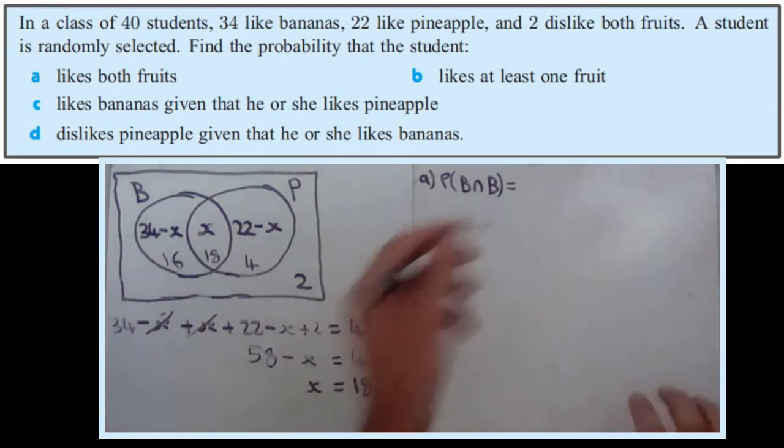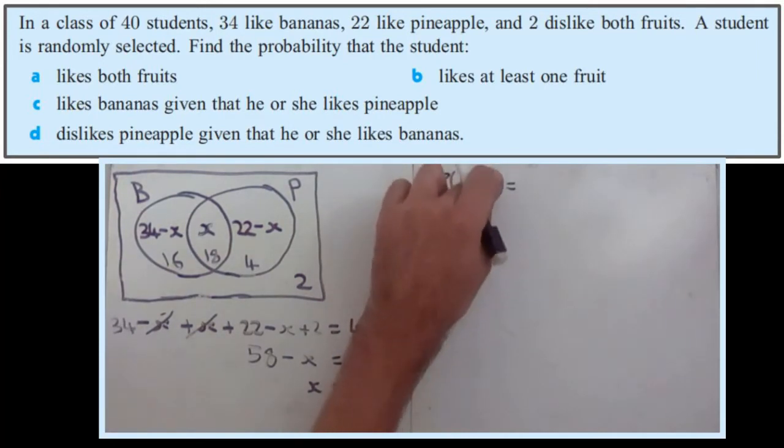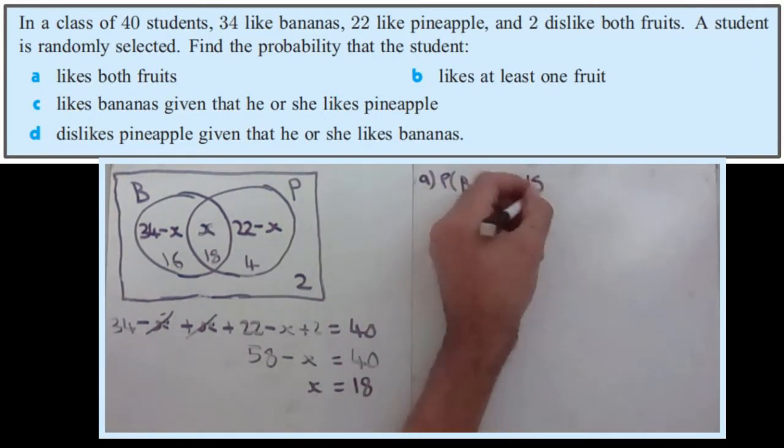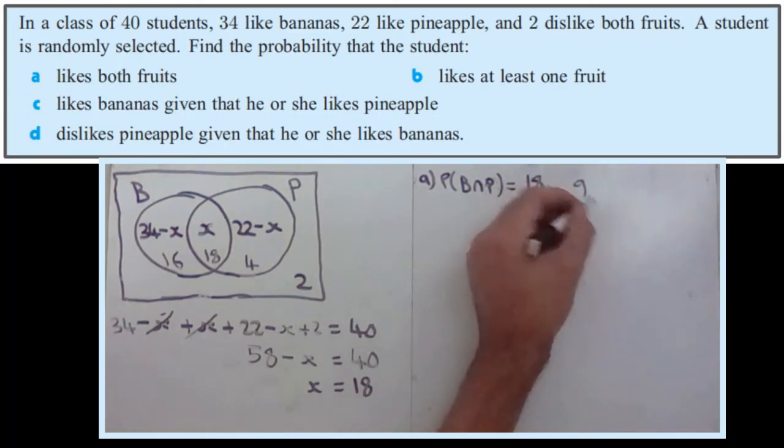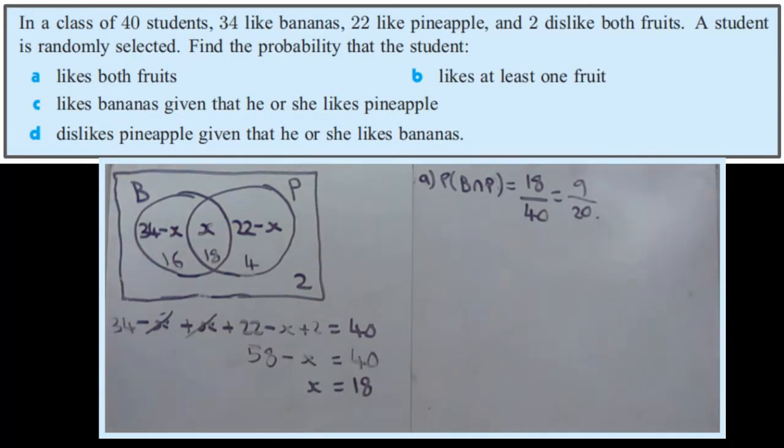So there's 18 people like bananas and pineapples. So 18, and there are 40 in total. You could simplify that to 9 over 20. It won't go any further.